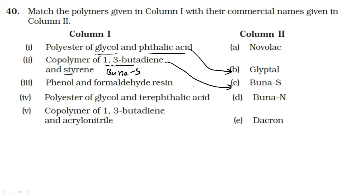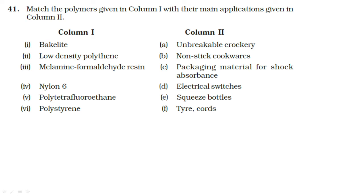Co-polymer of 1,3-butadiene and styrene is Buna-S. Phenol and formaldehyde give Novolac and Bakelite. Polyester of glycol and terephthalic acid is Dacron. Co-polymer of 1,3-butadiene and acrylonitrile is Buna-N.